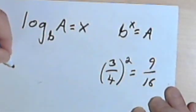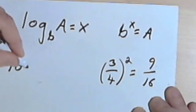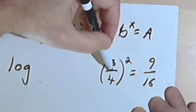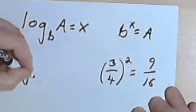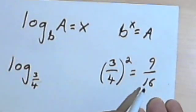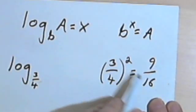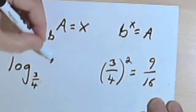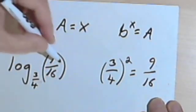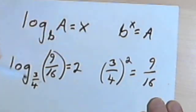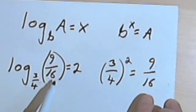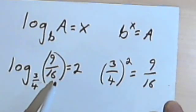So in logarithmic form, that's going to be the log. My base over here is 3 quarters. What 3 quarters squared equals was 9 sixteenths, so 9 sixteenths is going to be the argument of my logarithm. I'll put that in parentheses. And that equals 2, because 3 quarters squared is 9 sixteenths.